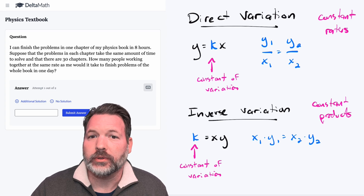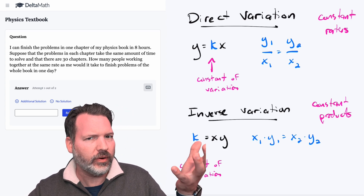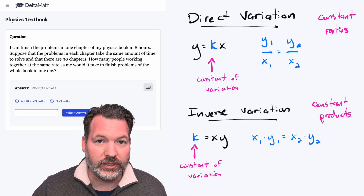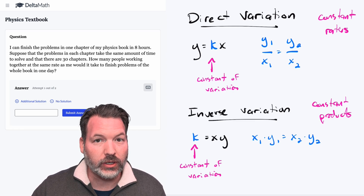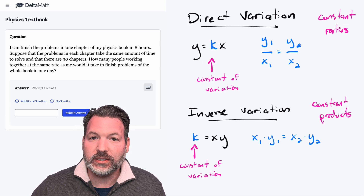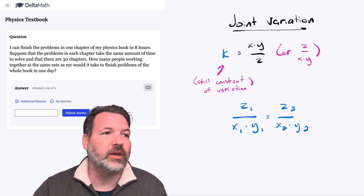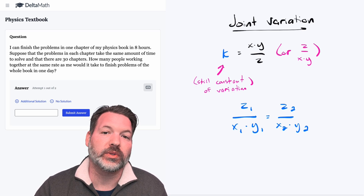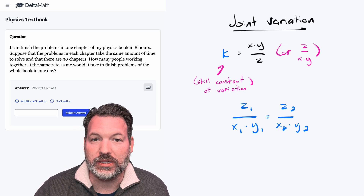But what if I have a scenario — like with my chickens, feed, and time — where I'm increasing two quantities and seeing how that affects the third? That is, I'm not just comparing two things at a time with direct or inverse variation, but instead comparing all three quantities at once. Typically, if I can do this in a sensical way, I can do it with what's called joint variation. Joint variation lets me combine inverse and direct variation all at the same time, using scenarios where the context allows for comparing three different quantities at once.